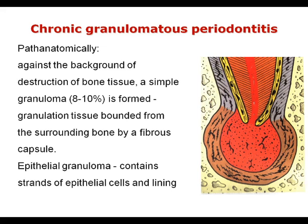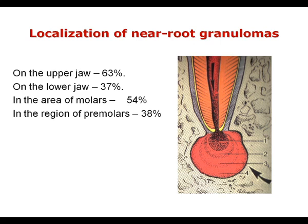Chronic granulomatous periodontitis: pathologically, against a background of bone tissue destruction, a simple granuloma of 8–10 mm is formed — granulation tissue bounded from the surrounding bone by a fibrous capsule. An epithelial granuloma contains strands of epithelial cells. Localization of periapical granulomas: upper jaw 63%, lower jaw 37%; in the molar region 54%, and in the premolar region about 38%.